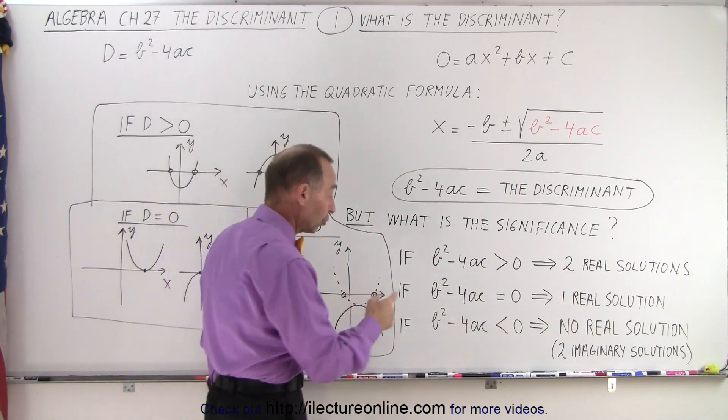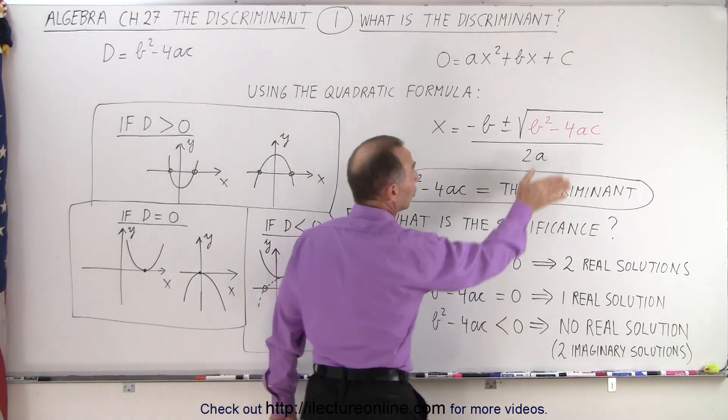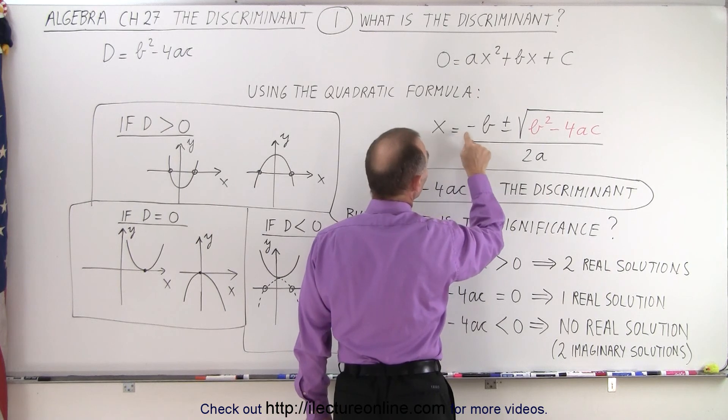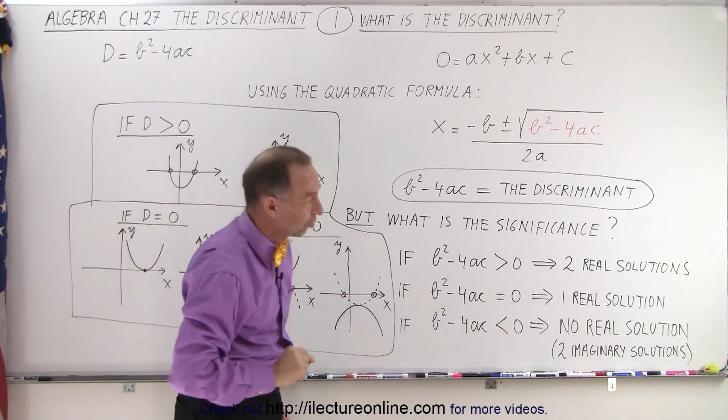But if the discriminant b² - 4ac is exactly equal to zero, so essentially that goes away, then we know that x equals -b over 2a. That means there's only one real solution.